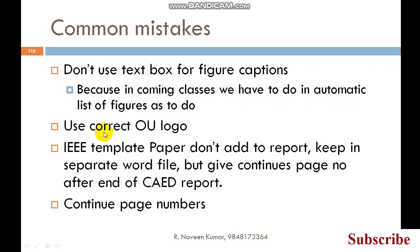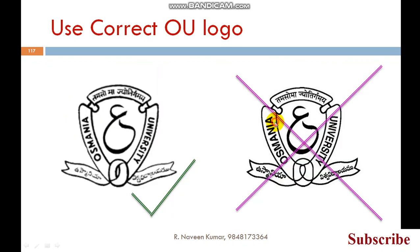The second thing is: use the correct logo. The correct logo is like this — this is the correct logo and this is the wrong logo. When a ribbon is folded, it looks like this — that is the correct folding. This incorrect one looks like a circle, which is not correct. You have to download the logo from the Osmania University website or University College of Engineering website; don't directly search in Google.